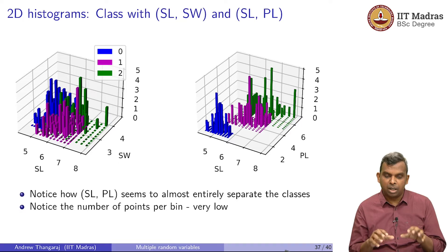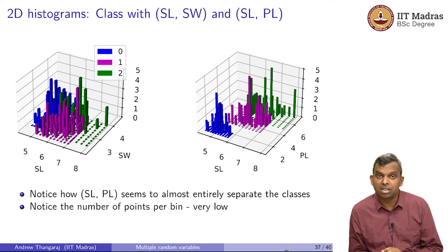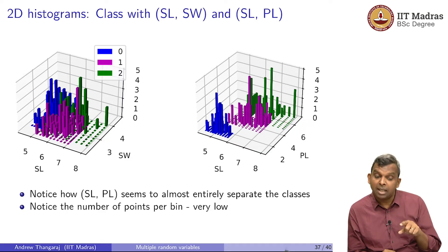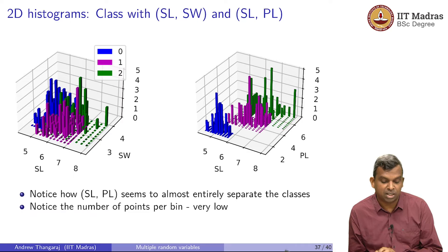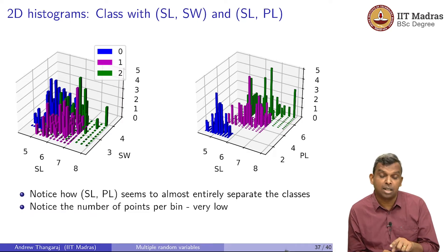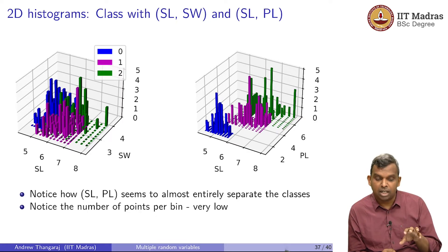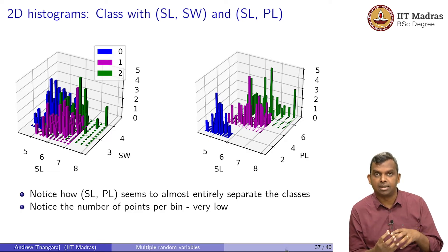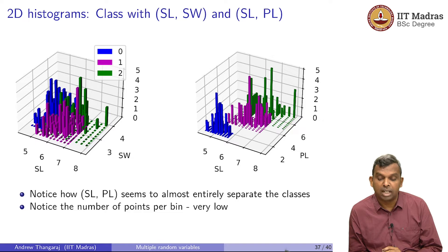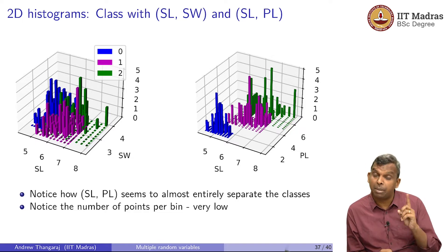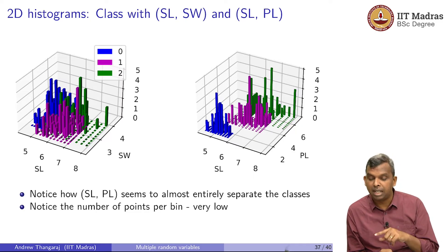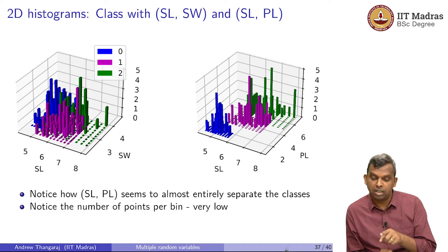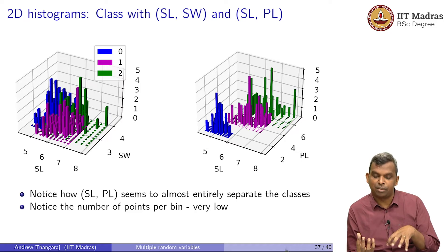We saw the summary things before, but now let me jump to one interesting type of picture. You can do these 2D histograms and combine them with the classes. What I have done in the left picture is the 2D histogram of SL and SW — we saw this before for only class 0, but now on the same plot I have done it for class 1 and class 2 shown in different colors. The plot on the right shows sepal length and petal length (SL and PL) again for different classes — class 0, class 1, class 2. You can see how the histograms look very interesting — they are very different 2D histograms and they give you a picture.